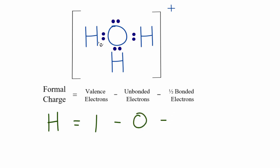And then bonded, these two are bonded, that's the chemical bond between hydrogen and oxygen. We're going to put two, but we divide it by two, and one minus one equals zero. So the hydrogen right here has formal charge zero.